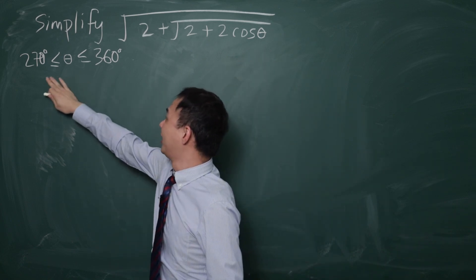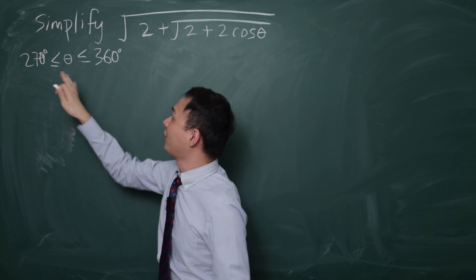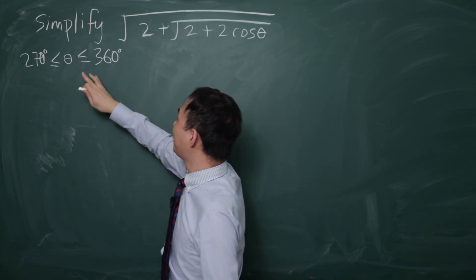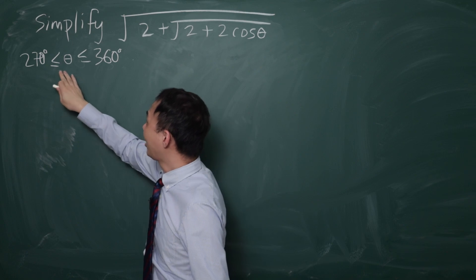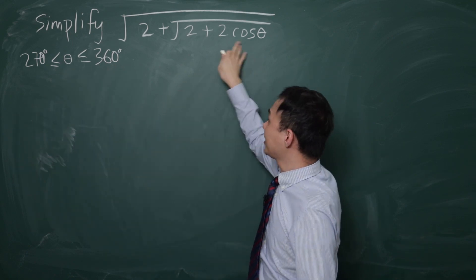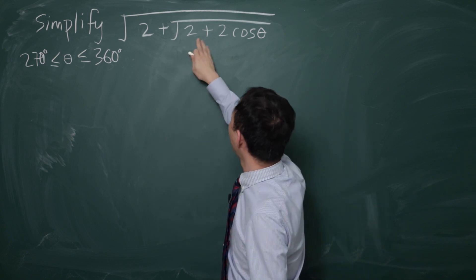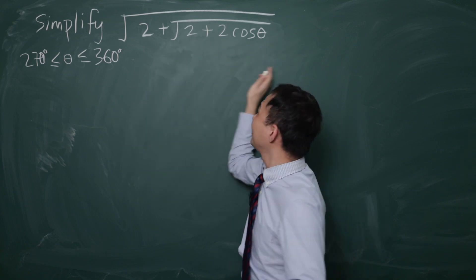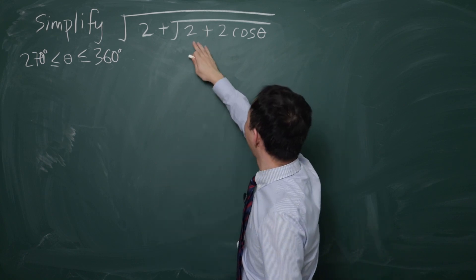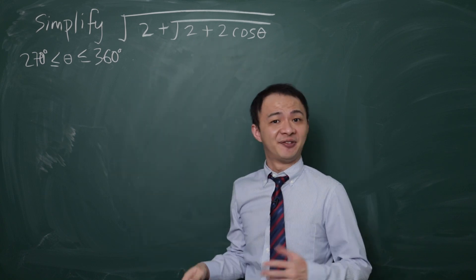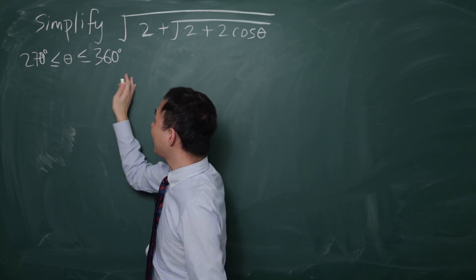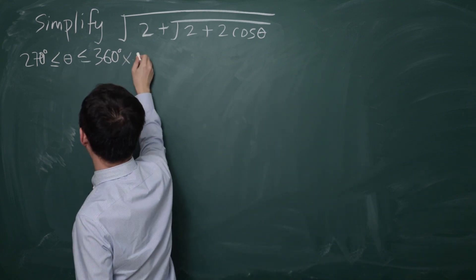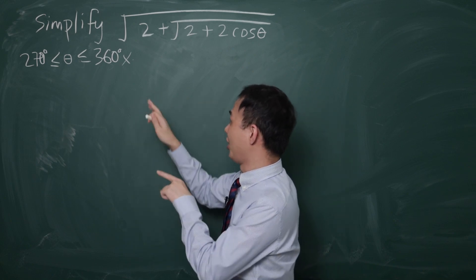They give you a range: theta is between 270 and 360 degrees. The main purpose of giving you this range is to tell you this is in the 4th quadrant, where cosine is always positive. So when you have 2 plus a positive value, this expression is solvable. If 2 plus 2cos(theta) were negative, it would be undefined and unsolvable. So the range just confirms the expression is solvable — you don't really need to use it beyond that.